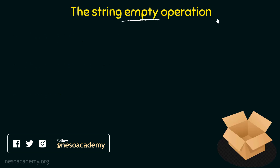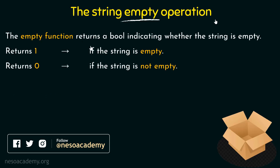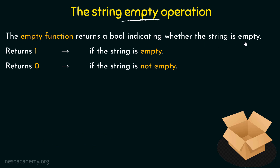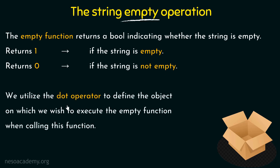The string empty operation is achieved using the string empty function, which returns a boolean indicating whether the string is empty. From the name itself, we can understand that this is used to find out whether a string is empty or not. It returns the boolean 1 if the string is empty, and 0 if the string is not empty. We utilize a dot operator to define the object on which we wish to execute the empty function.